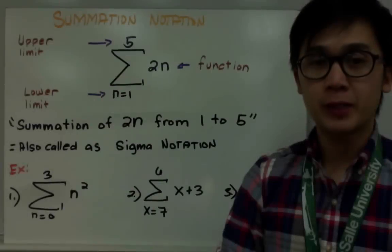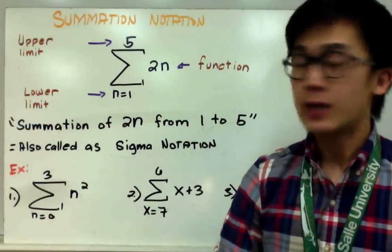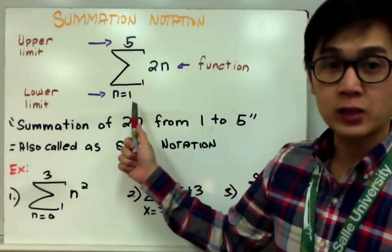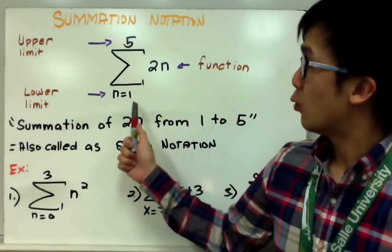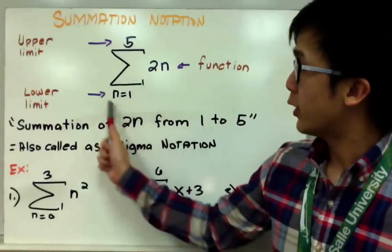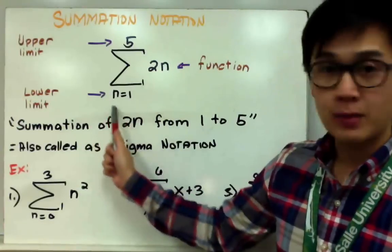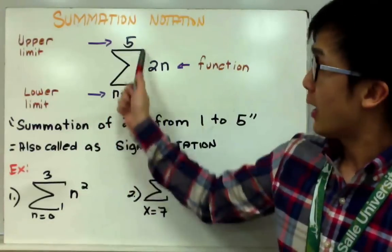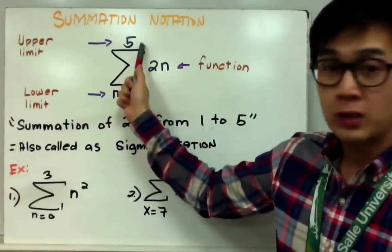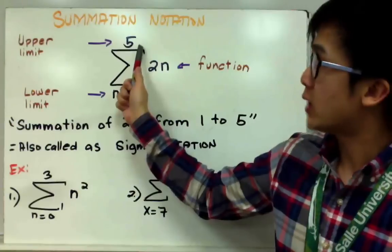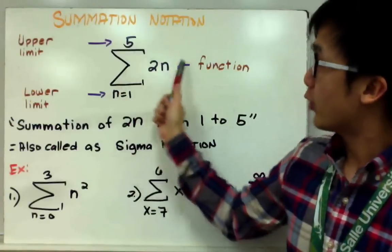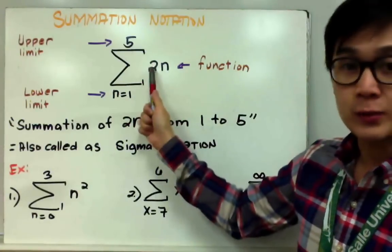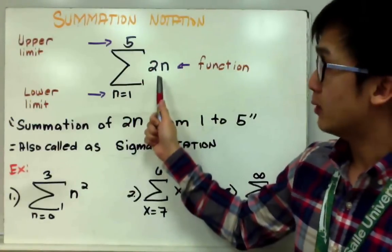Today we're going to be working on summation notation. This is an example of summation notation wherein you will see your lower limit at the bottom of your summation sign, the upper limit on top, and your function, which is 2n in this particular example.